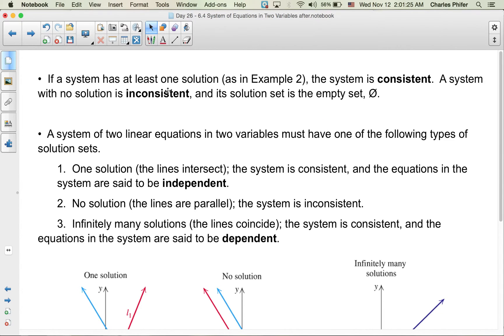If a system has at least one solution, we say that the system is consistent. A system with no solution is inconsistent; its solution set is the empty set. A system of two linear equations in two variables must have one of the following types of solution sets.